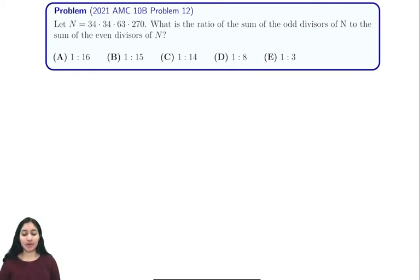Hi everyone, in this video we're going to be going through 2021 AMC 10B Problem 12, and this problem also appeared on the 12B. It says let N equals 34 times 34 times 63 times 270, and we're trying to find the ratio of the sum of odd divisors of N to the sum of the even divisors of N.